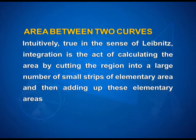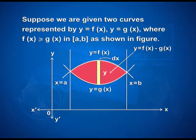Now let us study how to calculate the area between two curves. Intuitively, in the sense of Leibniz, integration is the act of calculating the area by cutting the region into a large number of small strips of elementary area and then adding up these elementary areas. Suppose we are given two curves represented by y equals f(x) and y equals g(x), where f(x) is greater than or equal to g(x) in the closed interval [a, b], as shown in the figure.